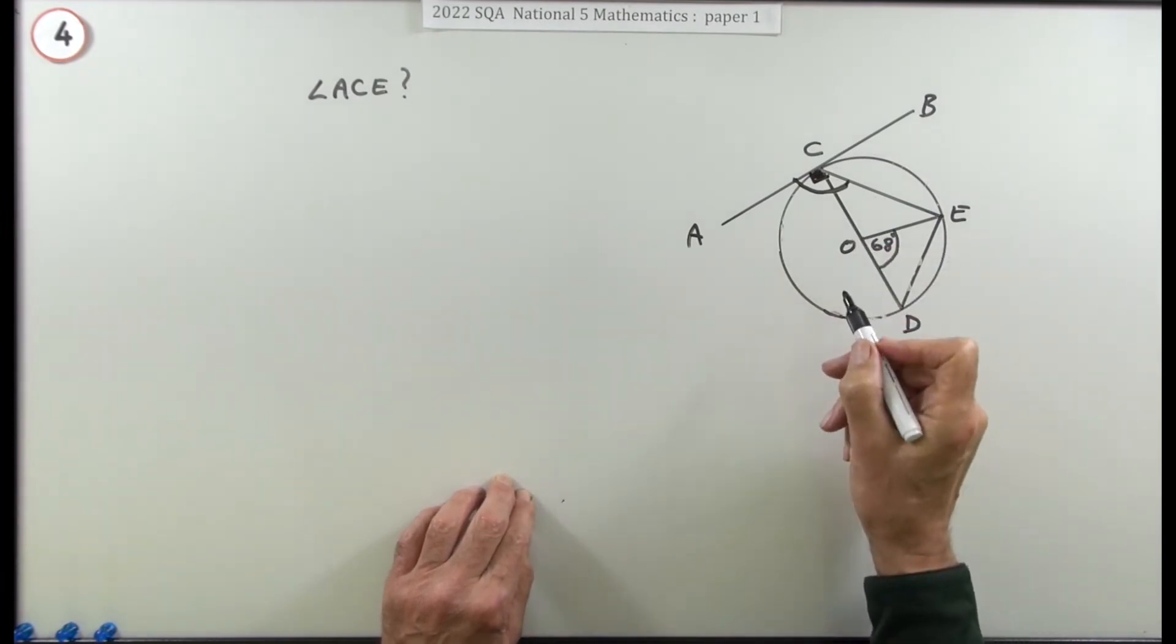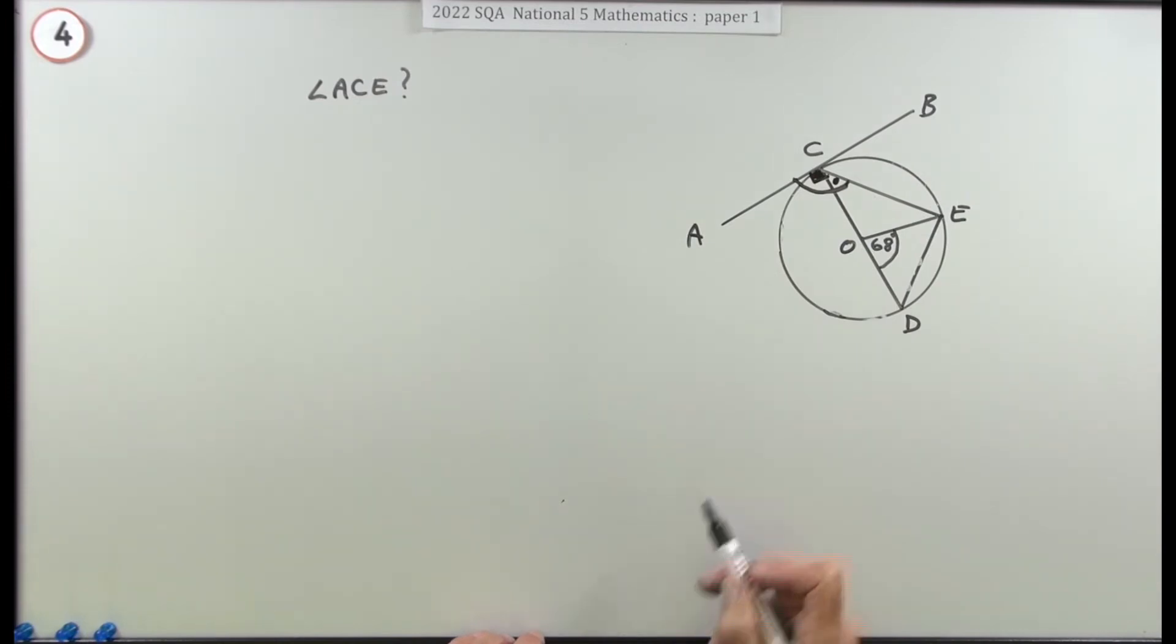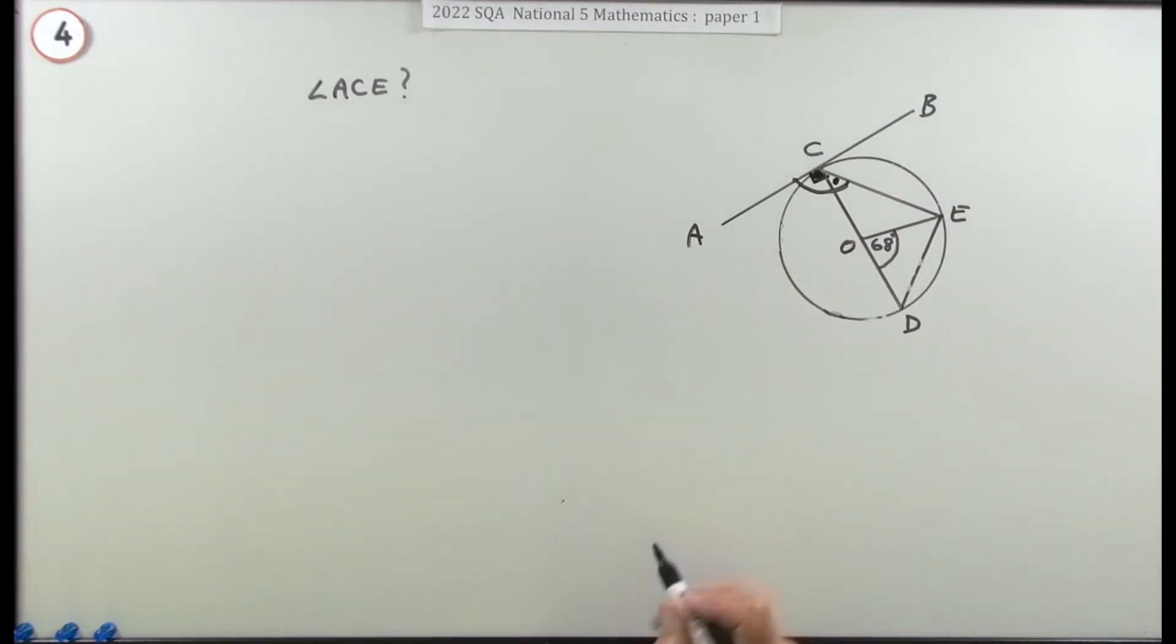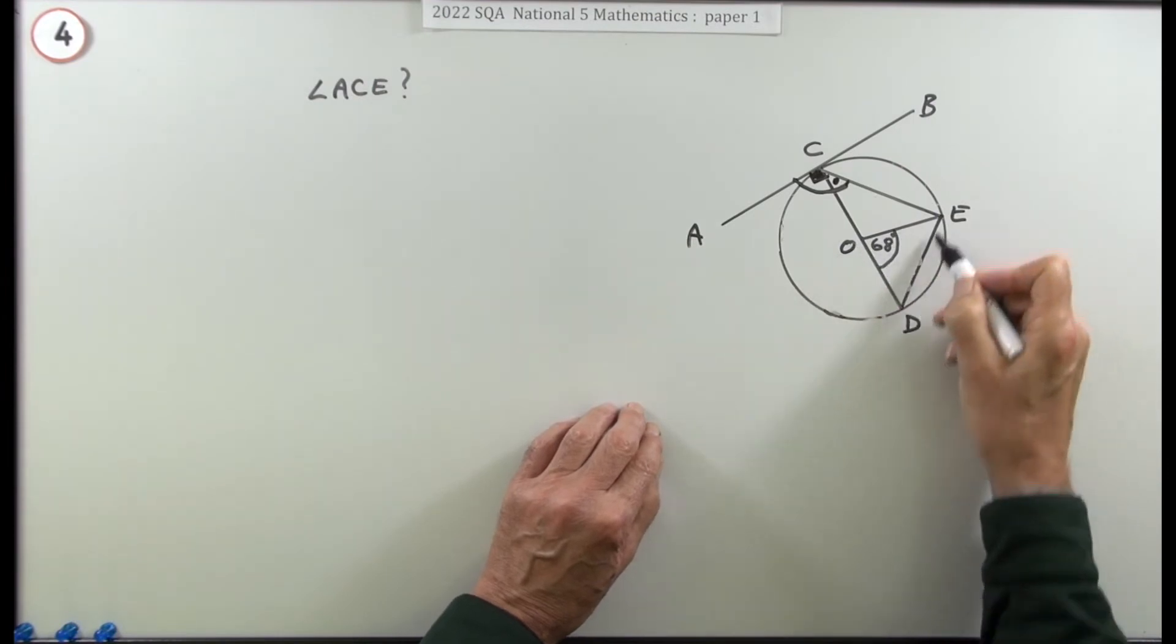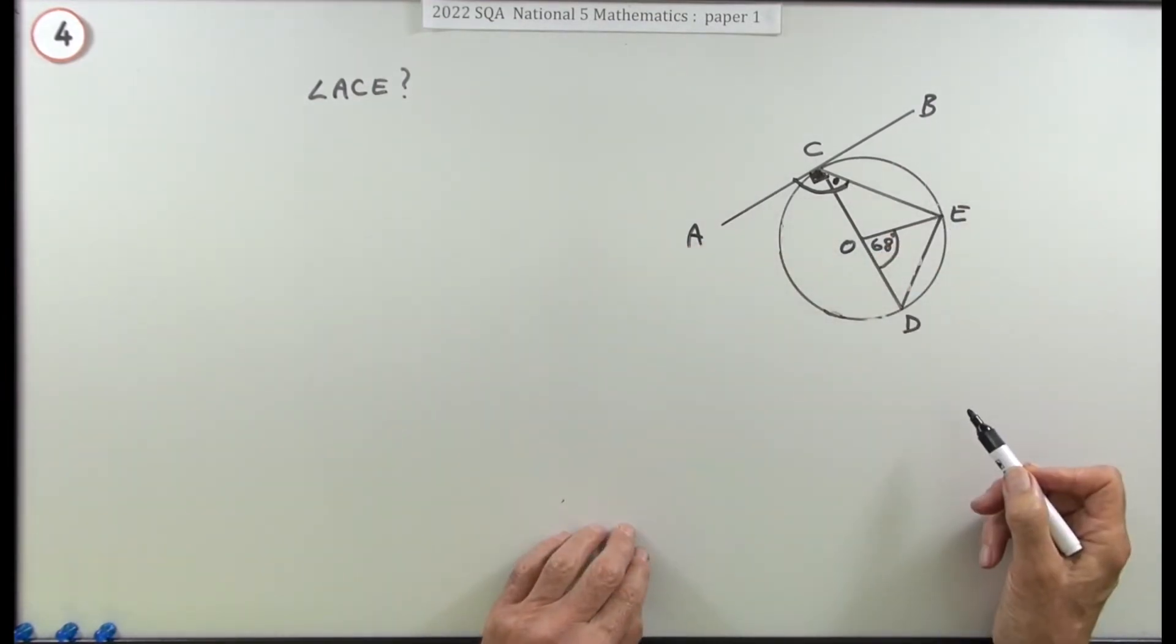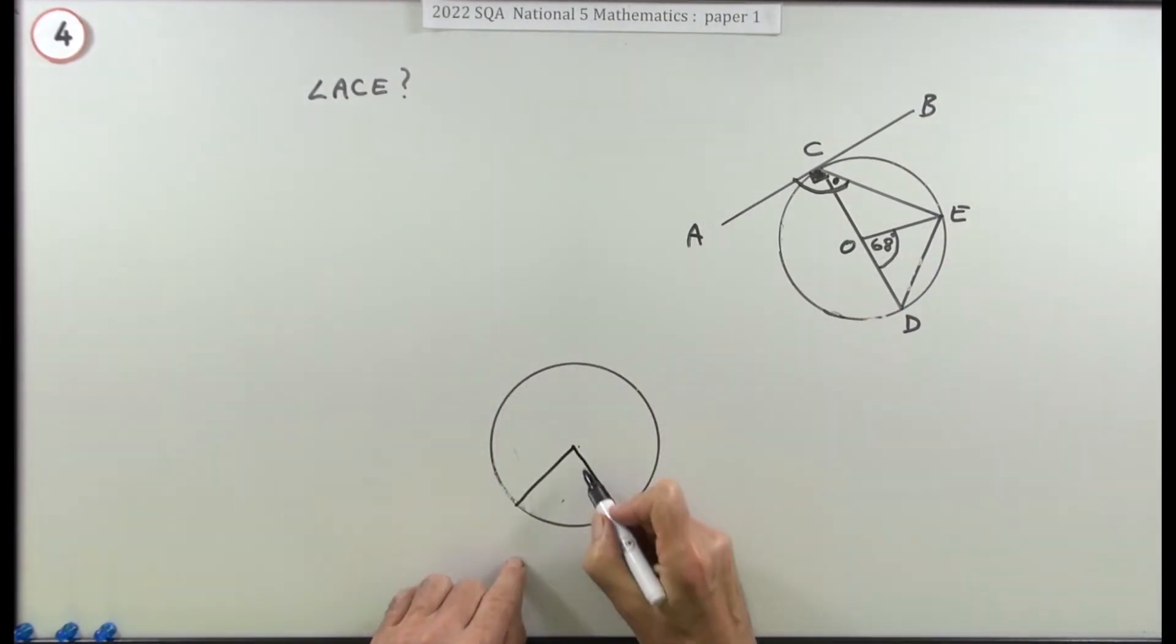One part you know: a tangent meets a radius or a diameter at right angles, so that part's 90. So in essence this question just says what's the size of this angle here - what's the size of angle OCE? So that should be the target. How can you find that?